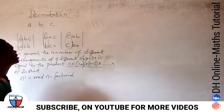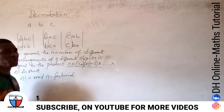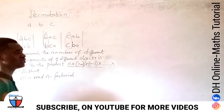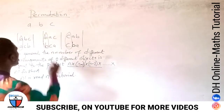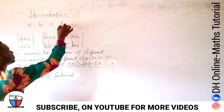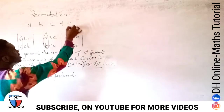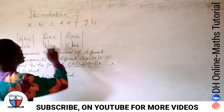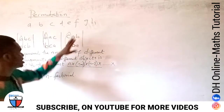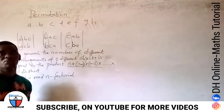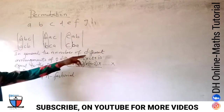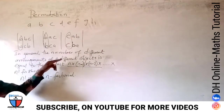We cannot keep doing this manually, because sometimes you are given a very large number of objects to arrange. If I extended this to A, B, C, D, E, F, G, H — eight objects — you can't keep listing them all. That is why the formula exists.